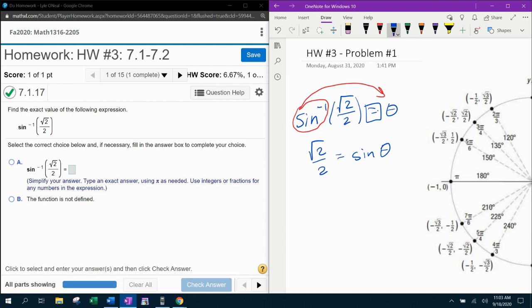So the next step is to remember that sine theta in the unit circle is y. And so what we're really looking for here is we're looking for what angle has a y-coordinate of square root of 2 over 2.